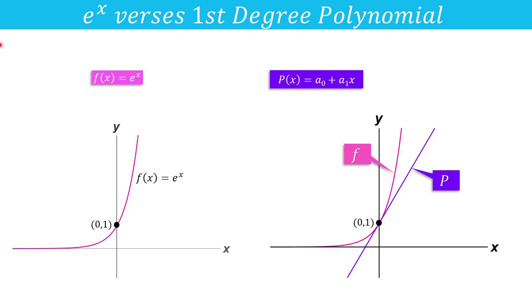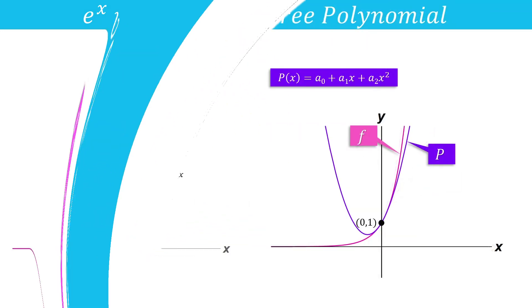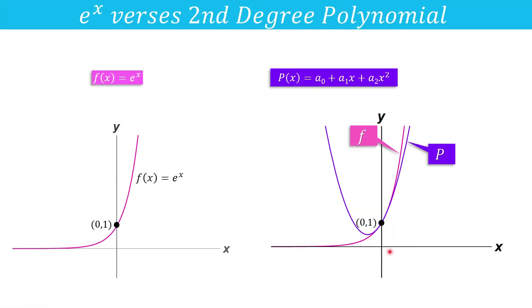There might be many polynomials whose graph passes through the point (0,1). For example, y = x + 1 passes through the point (0,1) and coincides with the graph of e^x very near to the point (0,1). But if we consider P(x) as a second degree polynomial, it is a better approximation than first degree polynomial.